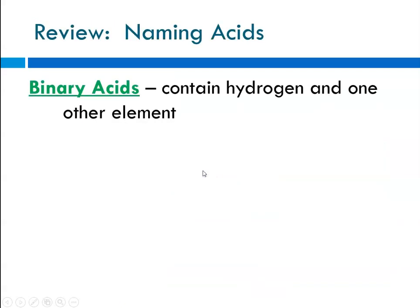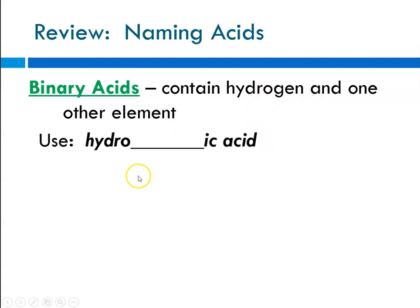Now it's a good time to review how we name acids. There were two kinds of acids we talked about during the naming unit. Binary acids contain only hydrogen and one other element. For binary acids we use the convention of 'hydro-blank-ic acid,' where the blank is the root word of the element. So if the element paired with hydrogen is sulfur, this would be hydrosulfuric acid.